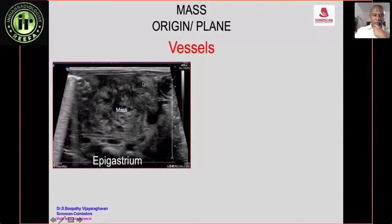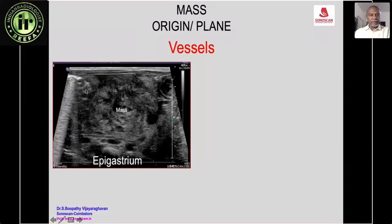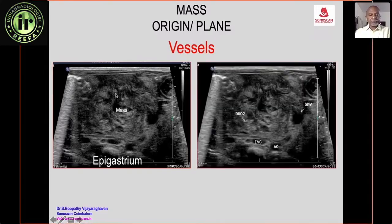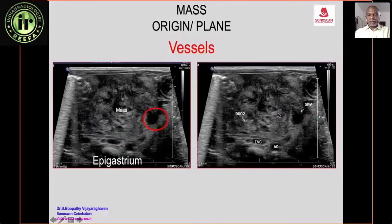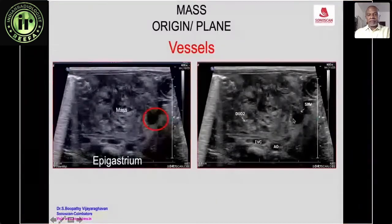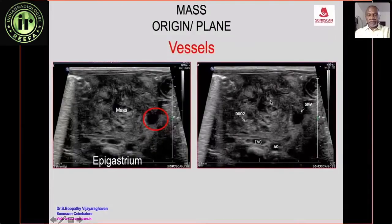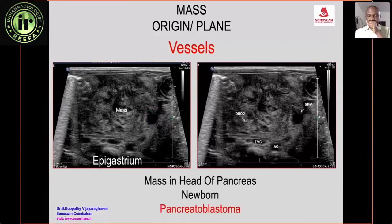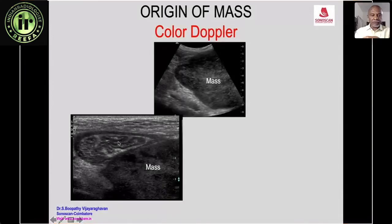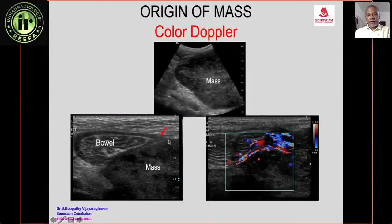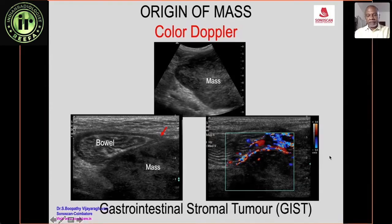A large right iliac fossa mass with external iliac vessels pushed anteriorly confirms a retroperitoneal mass, most likely lymph nodes. In a newborn with a large mass in the region of the pancreas, the duodenum is confirmed by fluid, the aorta and IVC are identified, and the mass lies surrounded by the duodenum, IVC, aorta, and superior mesenteric vein — placing it in the head of the pancreas. A heterogeneous mass in a newborn in this location is a pancreatic blastoma. Color Doppler flow from a small bowel loop confirms bowel origin for another mass.